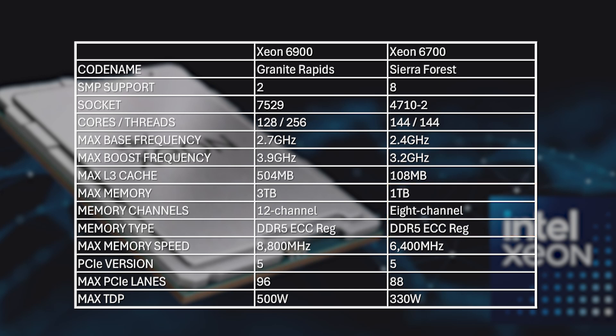All of this results in a massive size and power difference, with Xeon 6900 guzzling up to 500 watts, while Xeon 6700 consume a far more modest 330 watts. Still a lot of power, but that's the way that server CPUs and GPUs are going these days.